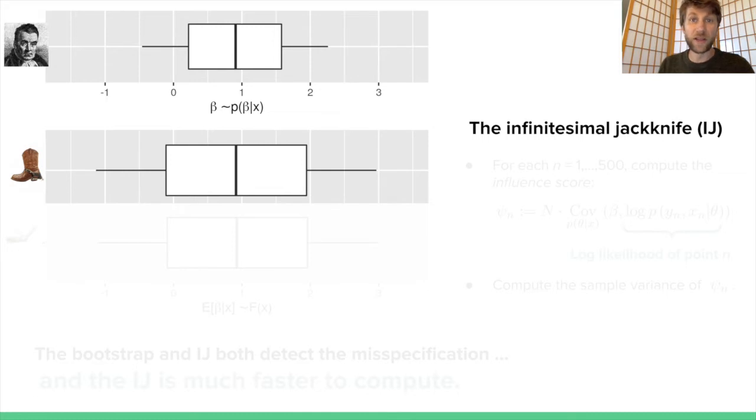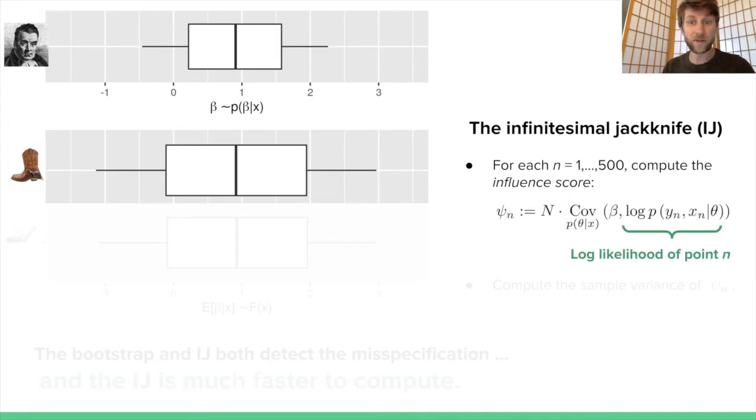Our proposal is called the infinitesimal jackknife covariance estimate, or the IJ covariance. That name and the procedure itself will probably seem a little mysterious at first, but I'm going to introduce it, show how it performs in this example, and then motivate it. To compute the IJ covariance, we're going to take each data point, as n goes from 1 to 500, and compute what we call the influence score. That influence score is n, the total number of data points in our sample, times this particular posterior covariance. The covariance is over all parameters in the posterior, which I'll call theta. It's the covariance between the quantity we're interested in, in this case the regression coefficient beta, and the log probability of the nth data point, given all of the parameters.